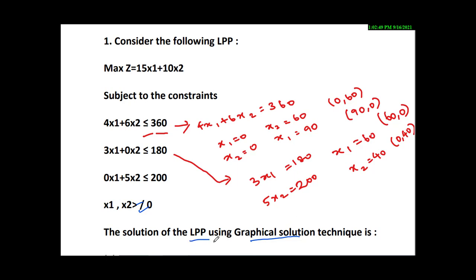To find the solution of the linear programming problem using the graphical method, it is a very easy technique. The question is max z, and we have constraints. Let's take the first constraint equation: 4x1 + 6x2.